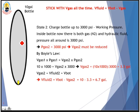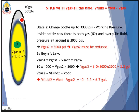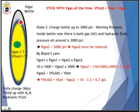At state number two, we continue to charge fluid into the bottle, which is already filled with nitrogen, until it reaches 3000 psi — the system working pressure. Inside the bottle there is now both compressed nitrogen gas and hydraulic fluid. The pressure inside the bottle is now 3000 psi, and so the pressure of the nitrogen gas is also 3000 psi.